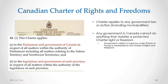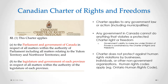Because the Charter applies to any government law or action, any government in Canada cannot do anything that violates a protected Charter right or freedom. Any law passed by a government in Canada that is found to be contrary to the Charter is invalid. Because the Charter only applies to government law or action, the Charter does not protect against human rights violations by businesses, private individuals,